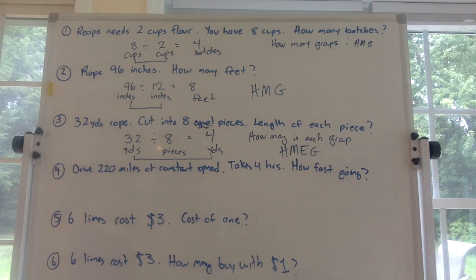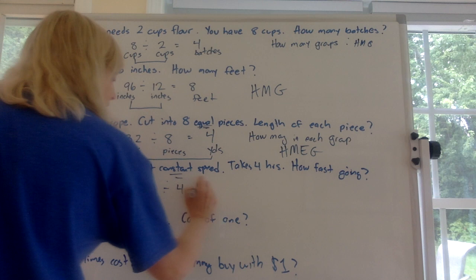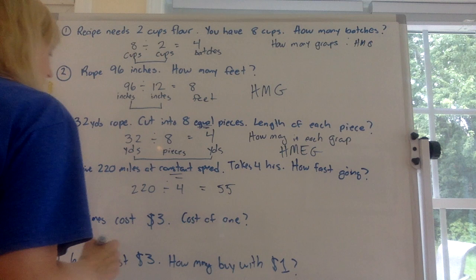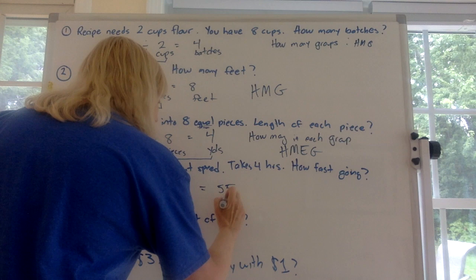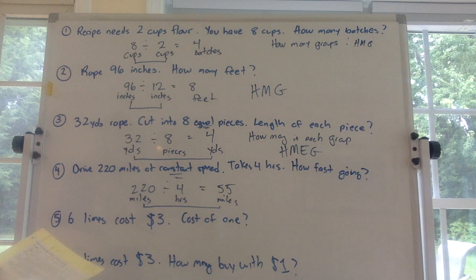Number 4: you drive 220 miles at a constant speed — notice the word 'constant' — it takes you four hours. How fast are you going? You do 220 divided by 4, which equals 55. Label it: 220 miles divided by 4 hours equals 55 miles per hour. The miles are on opposite sides of the equal sign. You're trying to figure out how many miles get stuffed into each hour — that's a HMEG interpretation.